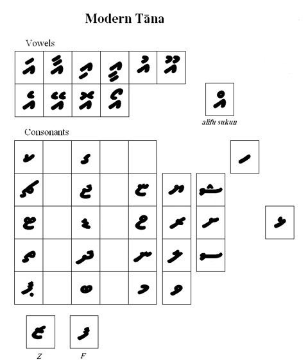Thana was added to the Unicode standard in September 1999 with the release of version 3.0. The Unicode block for Thana is U+0780 to U+07BF.